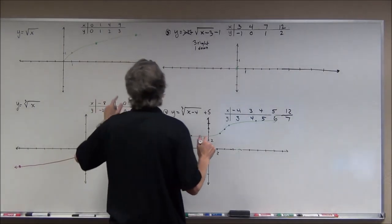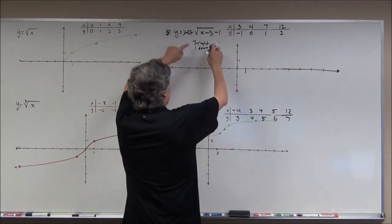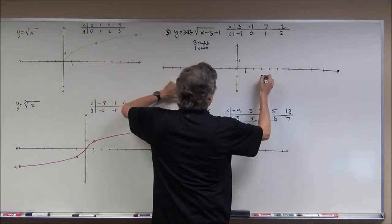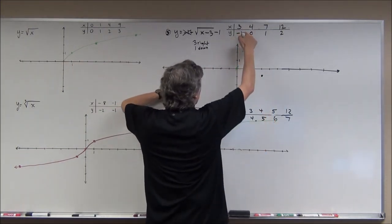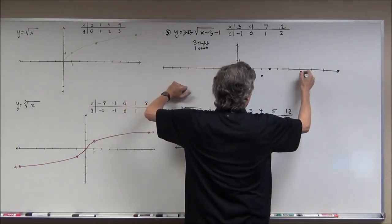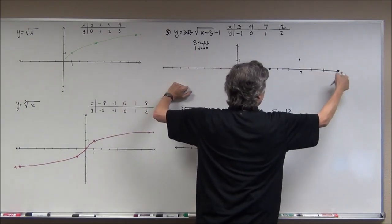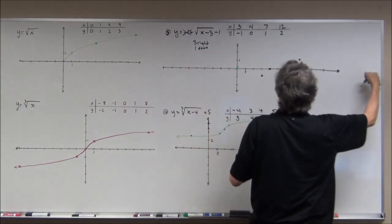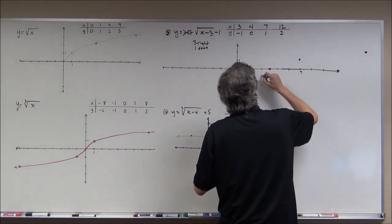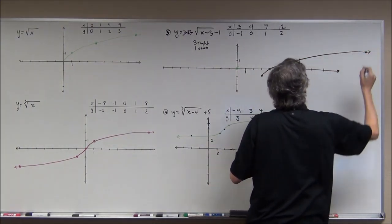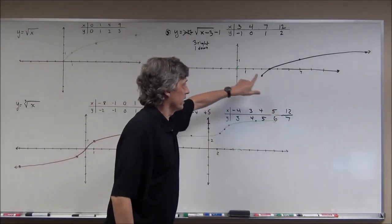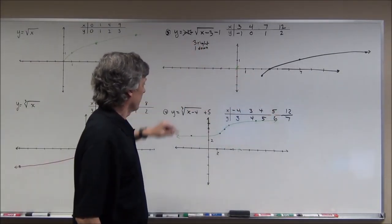Three to the right, one down — that's where the first point is. Then (4, 0), (7, 1), and (12, 2) way out to the right. It stops there and doesn't circle back around — it's not a whole parabola, just half of a parabola for the square root function.